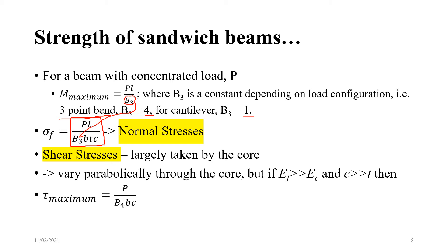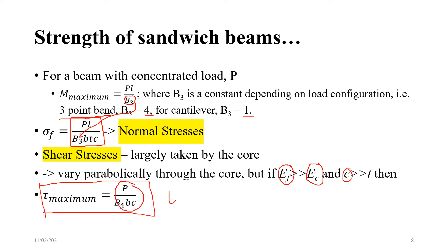Regarding shear stresses, the shear stress is largely taken by the core, as we have already seen. The shear stress varies parabolically through the core. However, if the elastic modulus of the face is much higher than the core, and C is much greater than T, then the shear stress takes a simplified form. Since core thickness is much higher than face thickness, the maximum shear stress has no dependence on face thickness — that is why the core largely carries the shear stress.